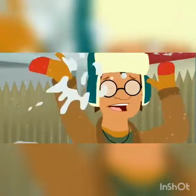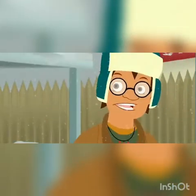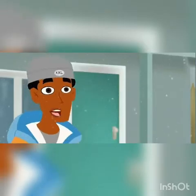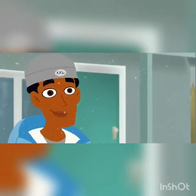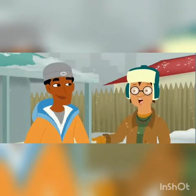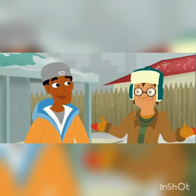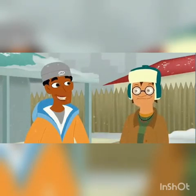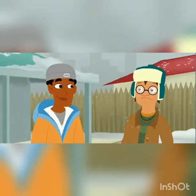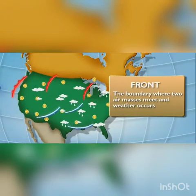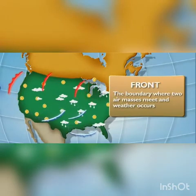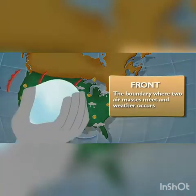Snow day! RJ, watch it! Sorry, I'm a little excited for our random day off. I can't believe there was a snowstorm — it just came out of nowhere. The snow didn't just come from nowhere; a cold front moved in. A what? A cold front? A front is the boundary where two air masses clash, and weather like snow occurs. There are warm and cold fronts.